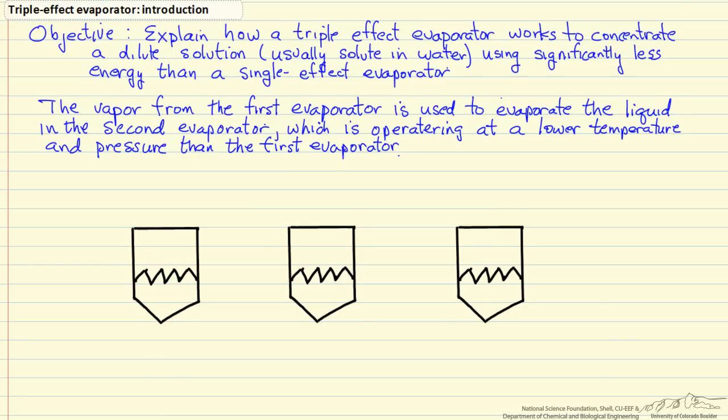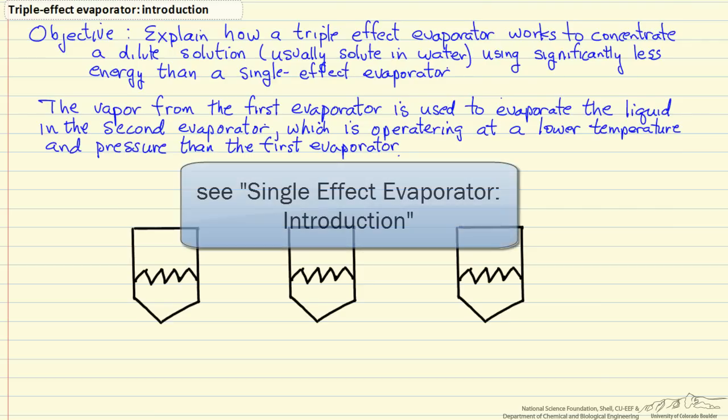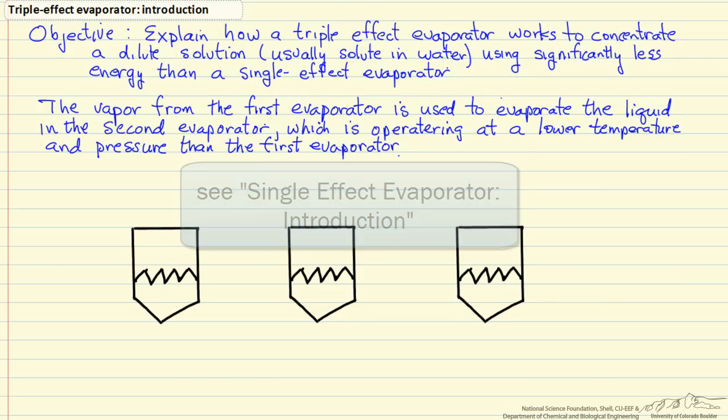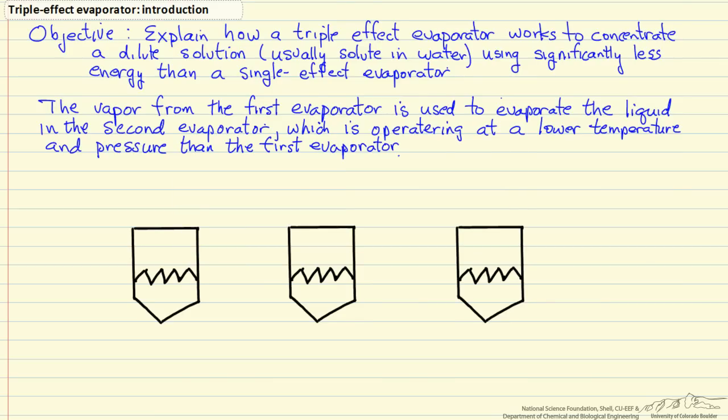In this screencast I'm going to explain how a triple effect evaporator works. Its objective is to concentrate a dilute solution, usually some solute in water, where we use significantly less energy than we would use in a single effect evaporator. There's a separate screencast on a single effect evaporator that would be worth watching first, which describes the behavior for one of these evaporators in the triple effect.